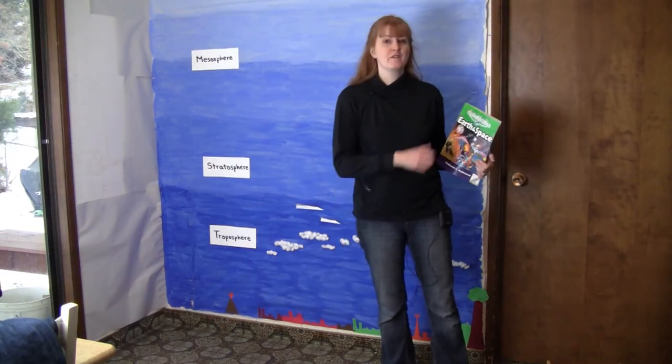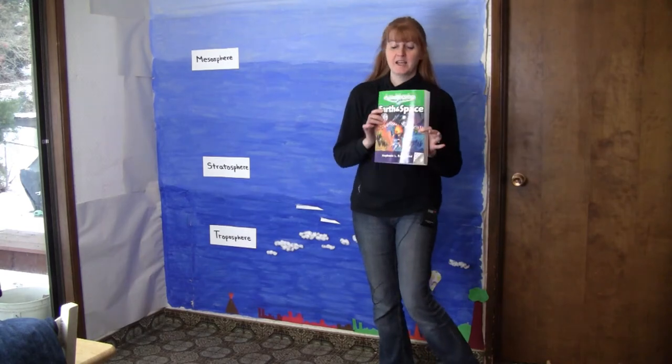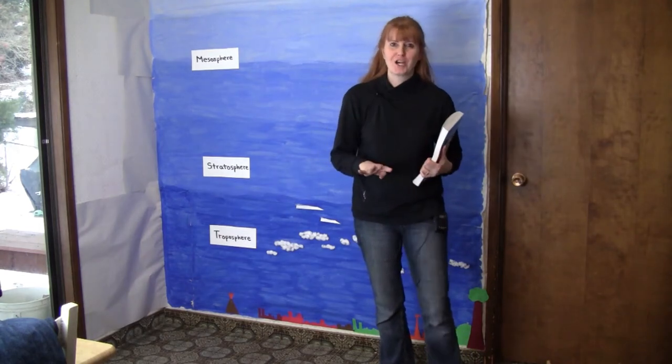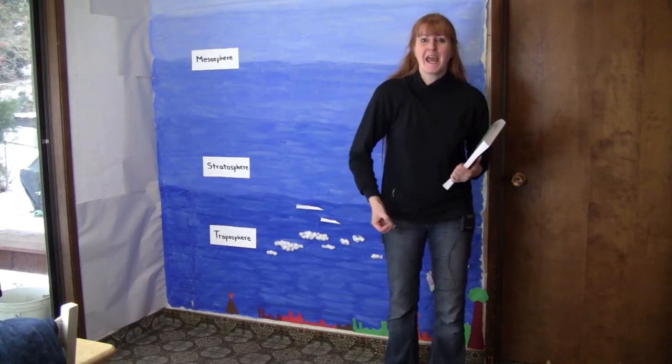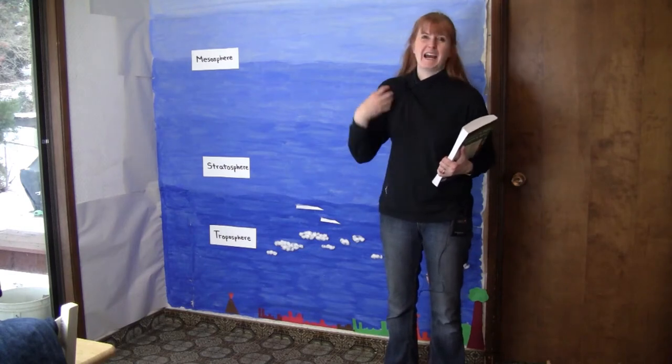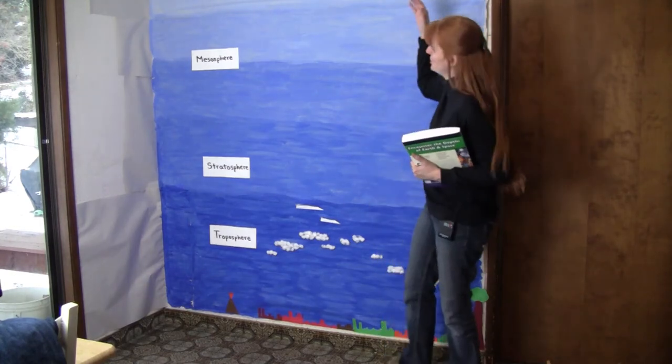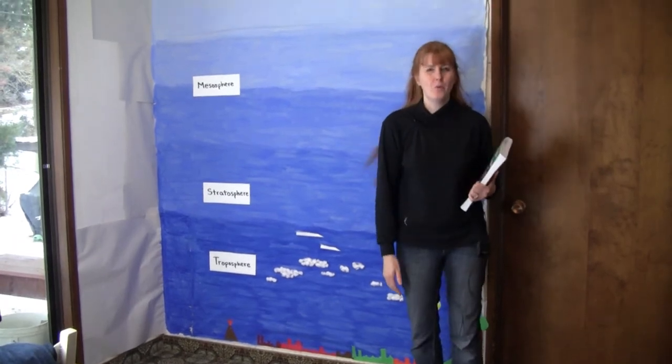My family is using Earth and Space by Bright Ideas Press. In this book, there are four chapters about the atmosphere, and the first activity in the book is to make a mural on the wall.